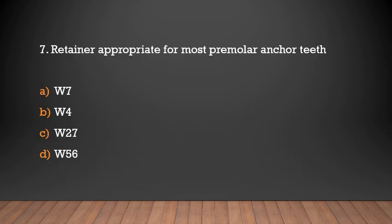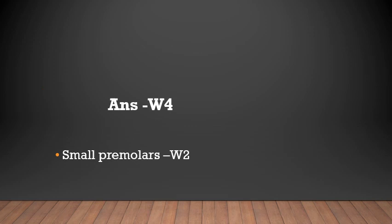Retainer appropriate for most premolar anchor sheet: W7, W4, W27, or W56. The answer is W4. W4 retainers are used in most premolars, while W2 retainer is used for small premolars.